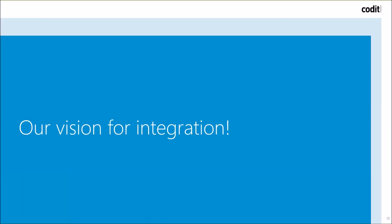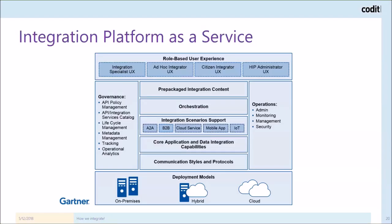Let's have a look at our vision at Coda on integration — in the end it's all about an integration platform as a service. We looked at Gartner to see how they define an integration platform as a service. In the middle they define the typical integration stuff: B2B capabilities, application-to-application integration, and support for many communication styles and protocols. But it's also a lot more than this — it's about governance, making sure your APIs are well-governed and secured, fast adoption, application lifecycle management, and automated deployments. Also important are administration, operations, security, and monitoring, because once your solution is in production it will need to be maintained.